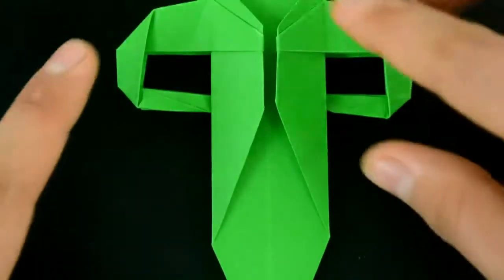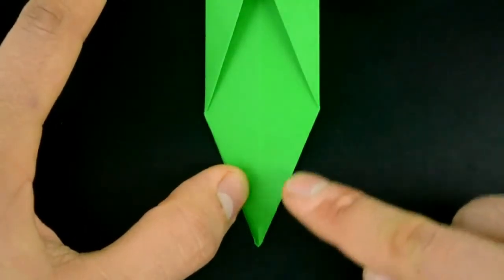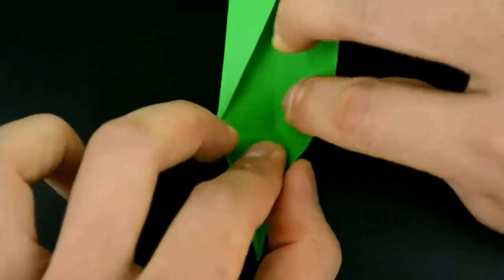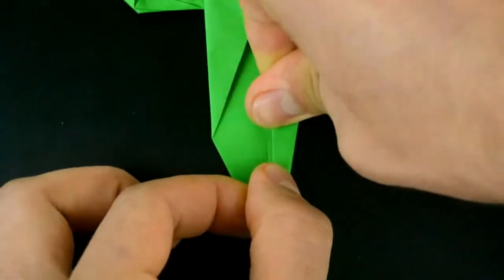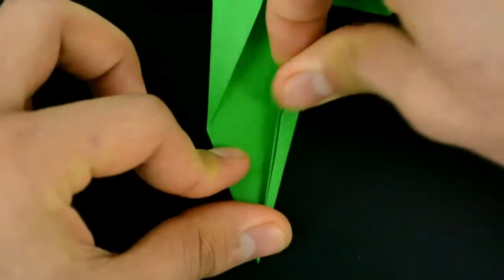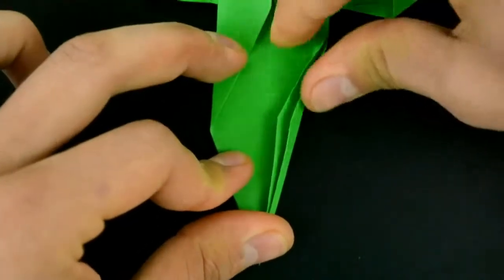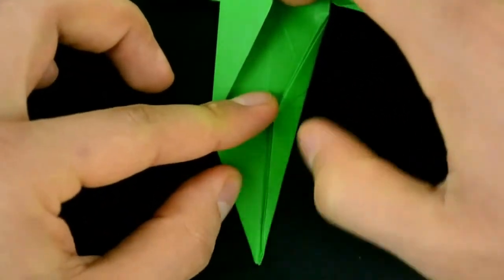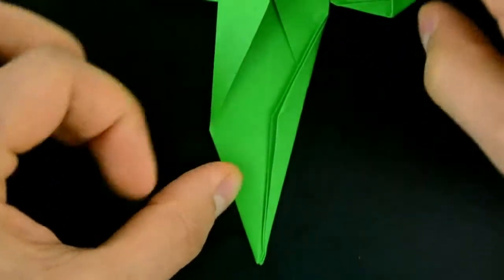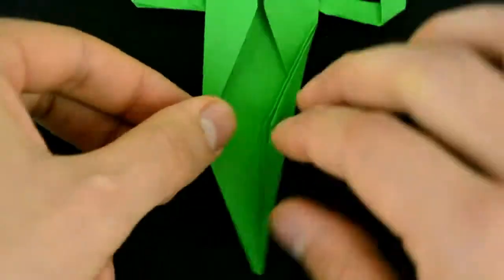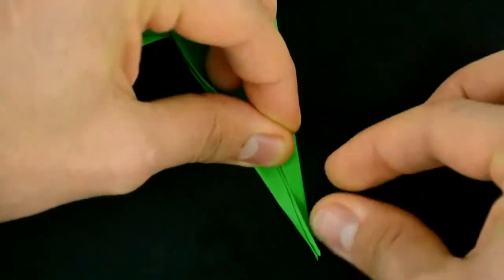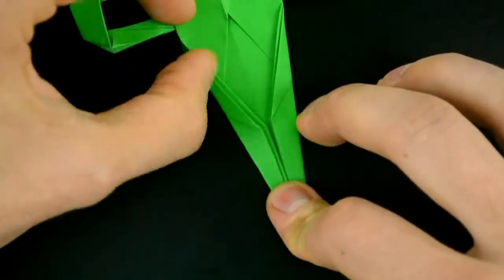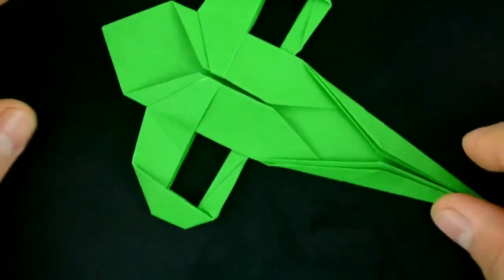Now let's make the details of the beak. First let's fold this diagonal edge here to the middle. Both layers at the same time. The left side as well. Then turn the paper over.